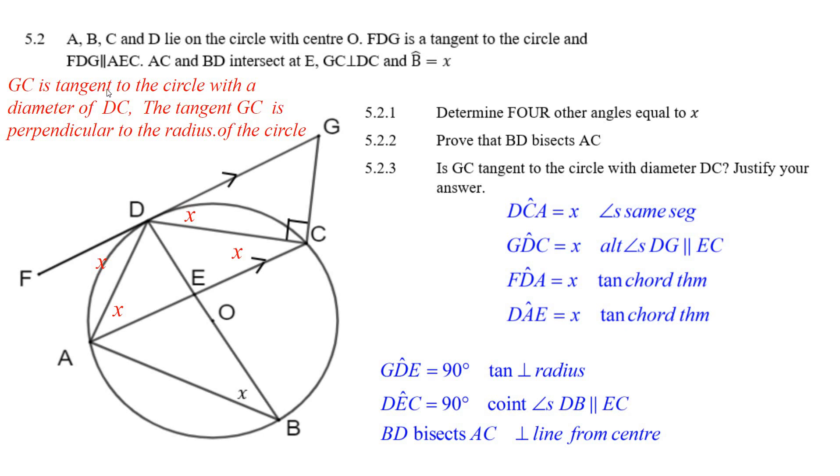G, C would be tangent to the circle with a diameter of D, C because G, C is perpendicular to what would be the radius.